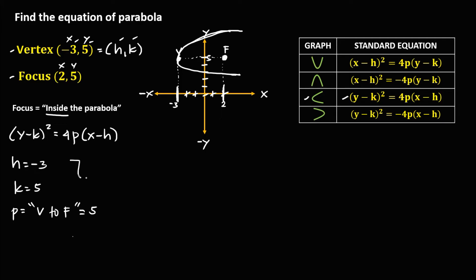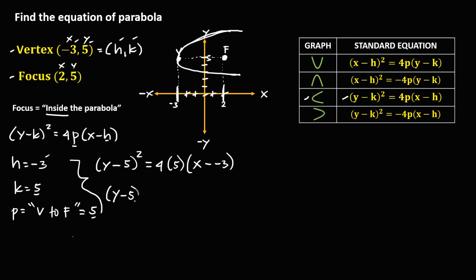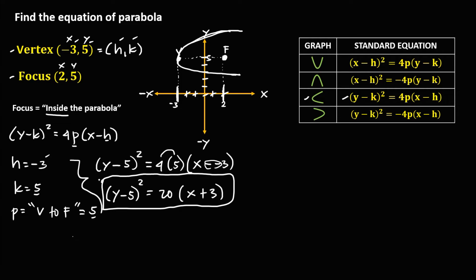To write the standard equation: (y − k)², where k is positive 5, equals 4 times p, where p is 5, times (x − h), where h is negative 3. Simplifying: (y − 5)² = 20(x + 3). This is the standard equation of this parabola.